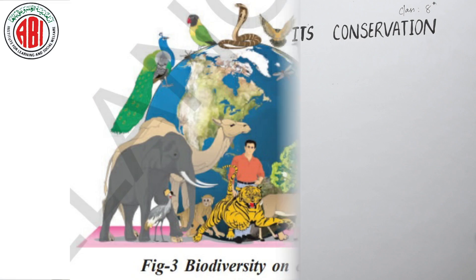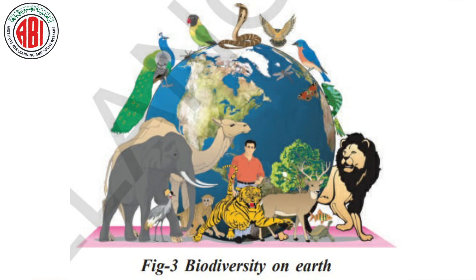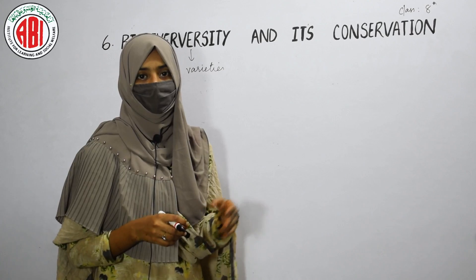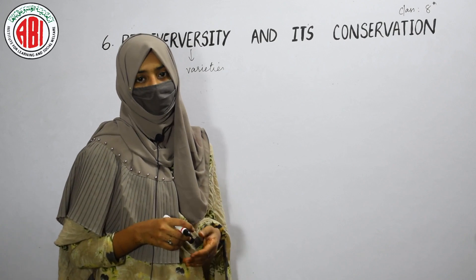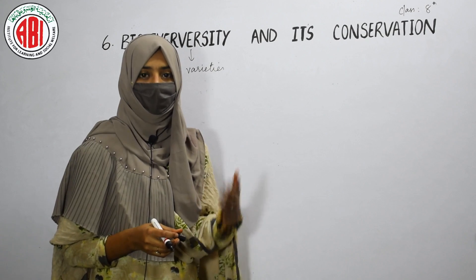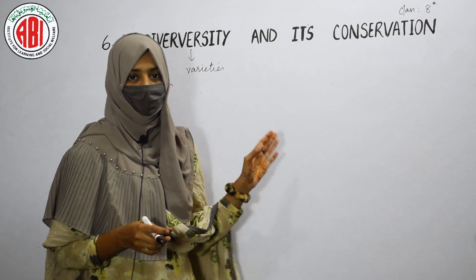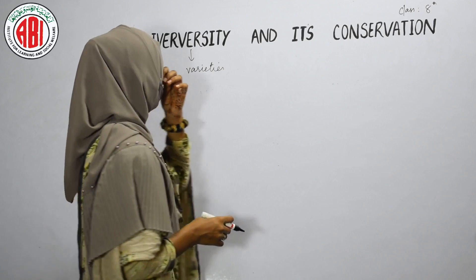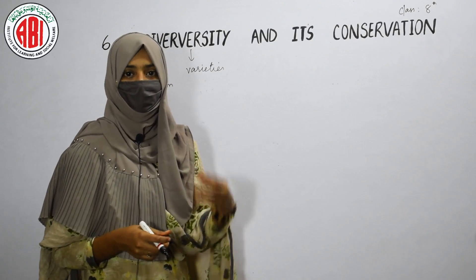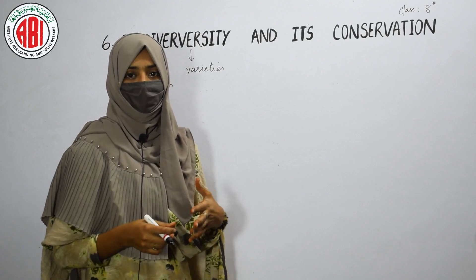Diversity means the varieties, so biodiversity is nothing but the varieties of plants, animals, and microorganisms that can be found in nature. We can see the difference in the shape, size, and color of plants, microbes, and animals. This difference in the characters and varieties of all these things can be termed as biodiversity.